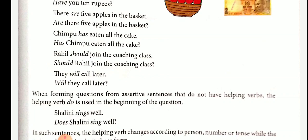The base form means the root form of the verb — write, wrote, written are three forms of the verb. 'Write' is the base form. To make it singular, we add S: 'writes.' To make it plural, we remove the S: 'write.' That is important.